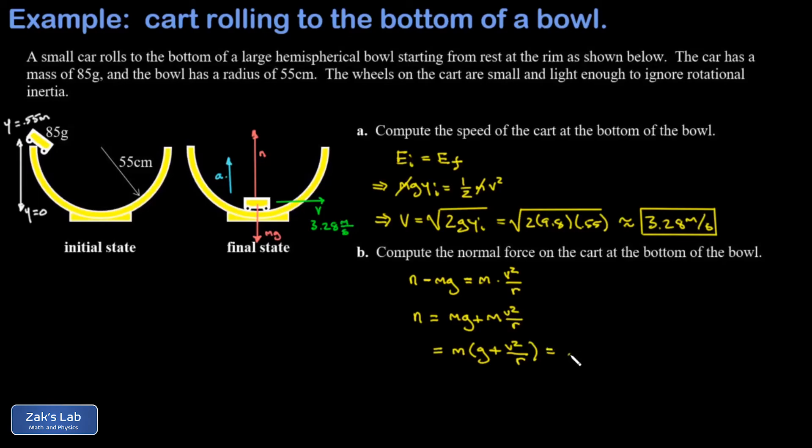Finally we'll plug the numbers in. This thing had a mass of 85 grams, that's 0.085 kilograms. g we're using 9.8 as usual. v we're taking from part A and that was 3.28 meters per second, so I square that and divide by the radius of curvature here which was 0.55 meters.